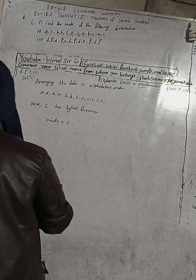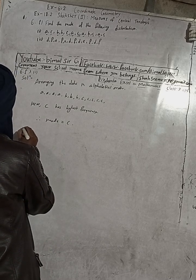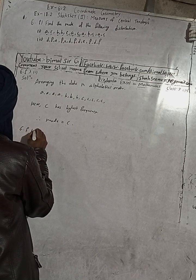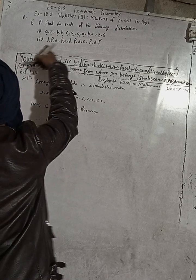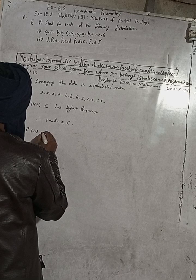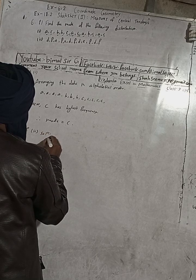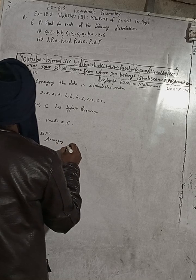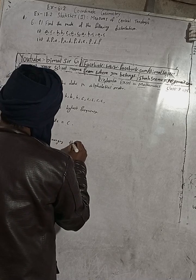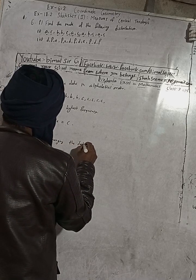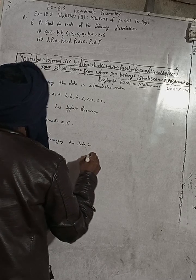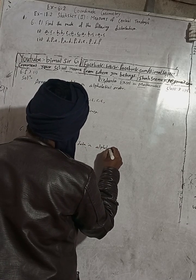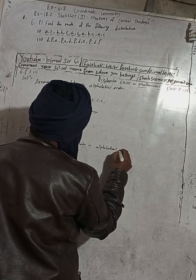Now moving to the next part, question 6F number 2. Arranging the solution — arranging the data in alphabetical order.